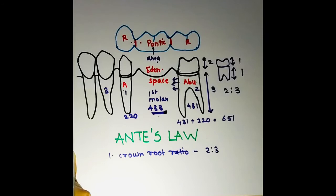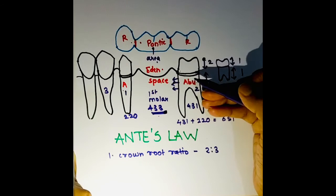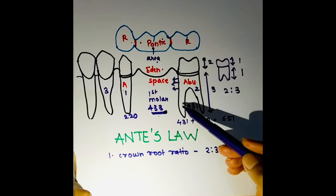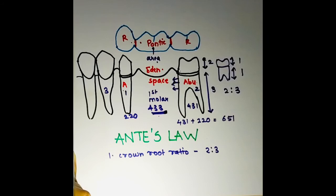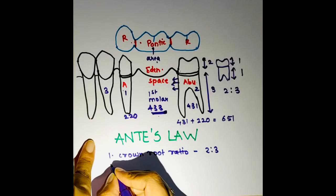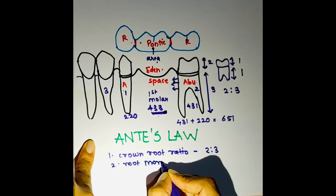The second consideration is root morphology — how your root appears. When your root is longer it gives better support; if it is shorter it doesn't give as good support, so root morphology must be considered. The third consideration is dental occlusion, which is the most important parameter when making a fixed partial denture. These are the three main factors to be considered alongside Ante's Law.